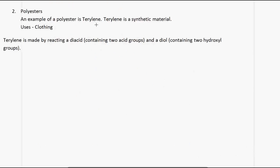The second type of condensation polymerization we're going to look at is polyesters. An example of a polyester is terylene. Terylene is a synthetic material and is used in making clothing.